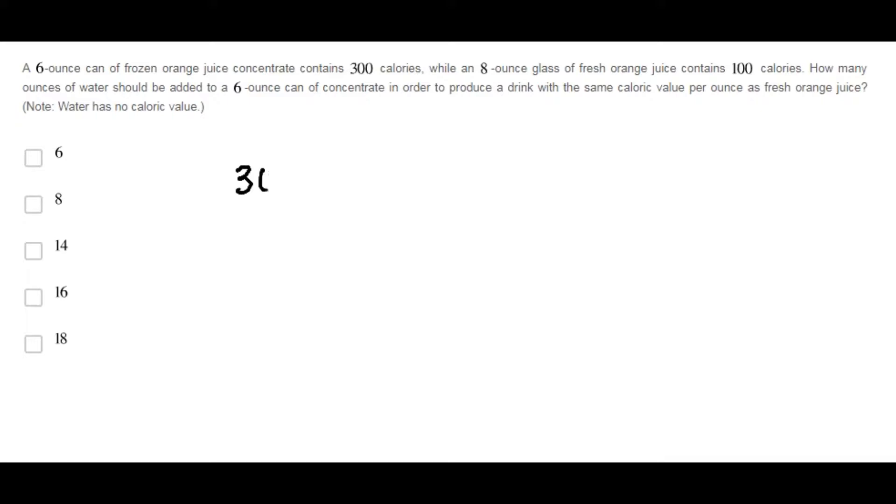So, they state the following: there are 300 calories every six ounces of frozen orange juice concentrate. But we need to convert this proportion into this other proportion, 100 calories every eight ounces. So in order to convert this proportion, we need to add some water. Therefore...